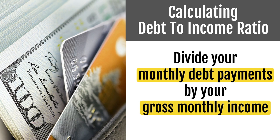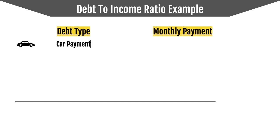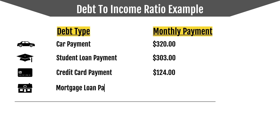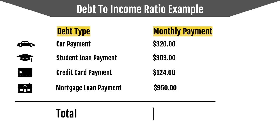Let's look at an example. We're gonna look at the debt type and the monthly payment. We have a car payment of $320 per month, a student loan payment of $303 per month, a credit card payment of $124 per month, and a mortgage loan payment of $950 per month. The total of those monthly payments is $1,697.